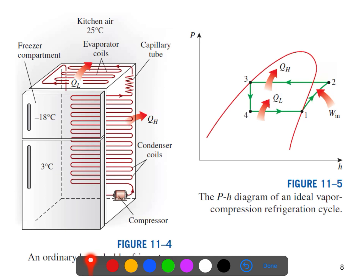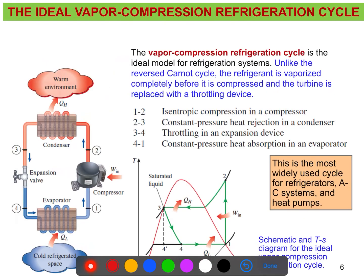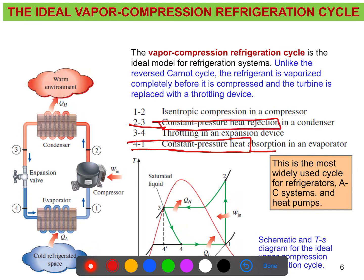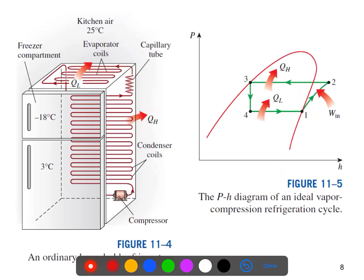This is the physical arrangement, but let's understand the diagram. Here you will see the pressure-enthalpy (P-H) diagram. We discussed earlier that for processes 2-3 and 4-1, it will be constant pressure heat absorption and constant pressure heat rejection. We also discussed the T-S diagram showing temperature and entropy.